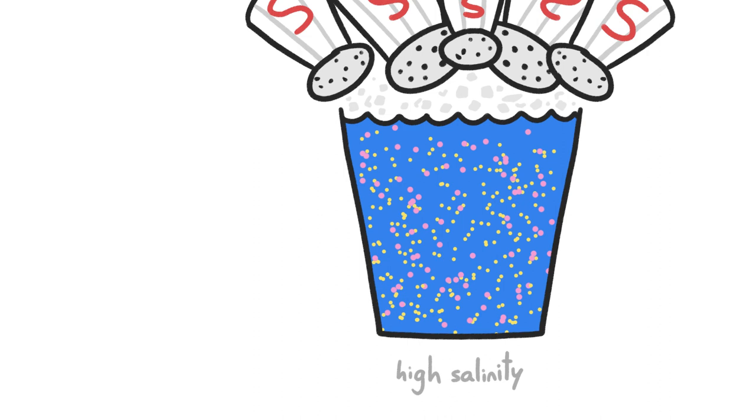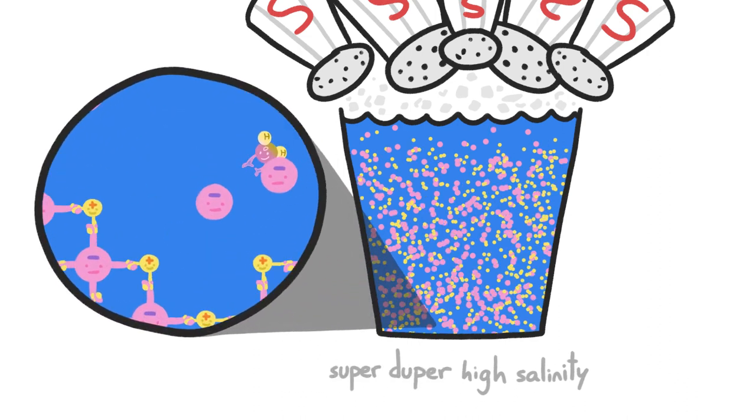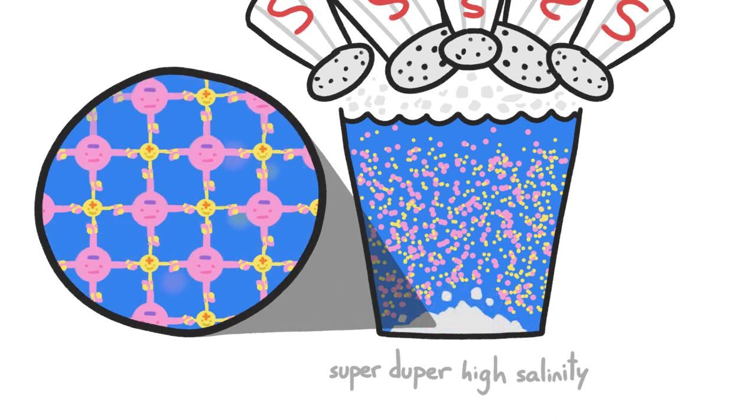If you added lots more salt to your cup, you'd reach a point where there would be so many ions that they'd bump into each other and recrystallize faster than the water molecules could tear them apart, causing actual salt crystals to start piling up.